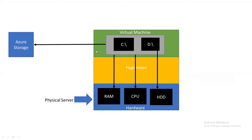Whenever you put data on the C drive or retrieve it, it travels through a network path and accesses data from the Azure storage account where your C drive is kept. This is not locally available in your virtual machine — it is located somewhere in the Azure storage account and mapped inside your VM. Because data travels via a network path, there will be latency here.